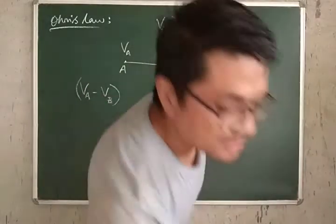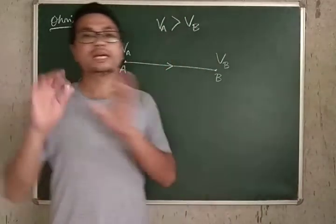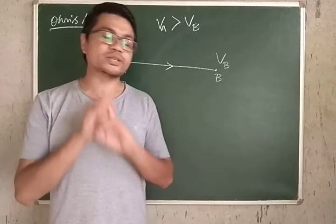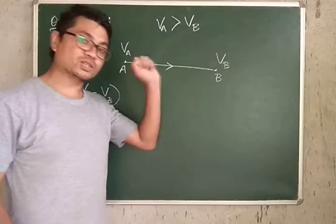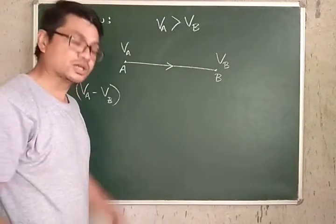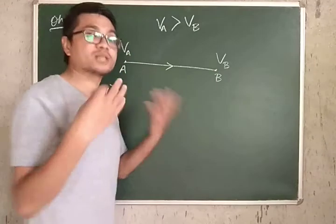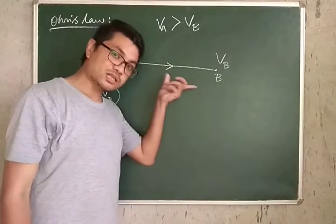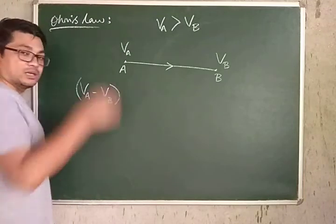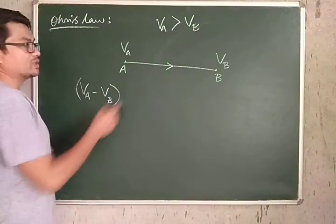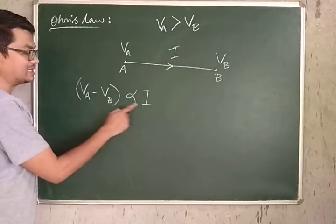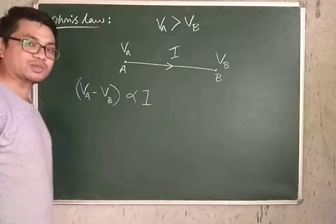There are certain conditions necessary: temperature and other physical conditions must remain constant. With those conditions met, the current flowing through a conductor is directly proportional to the potential difference across its ends. Greater the potential difference, greater is the current flowing — that is what Ohm's law tells us.